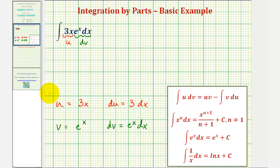This is the information we need to apply the integration by parts formula. So the given integral is equal to u times v minus the integral of v du. Well, u times v would be three x e to the x minus the integral of v du, which would be e to the x times three dx, or three e to the x dx.